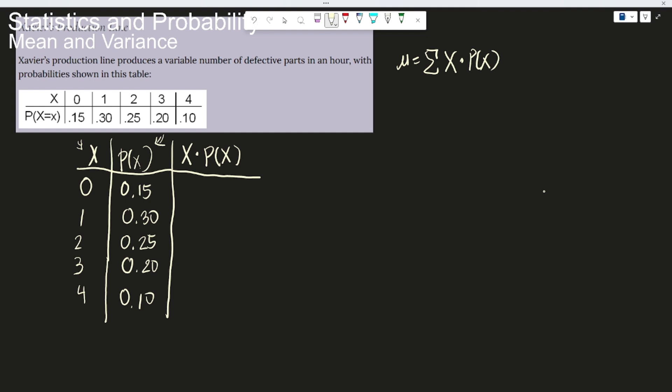So row by row. So that would be 0 times 0.15 would be equal to 0. 1 times 0.30 would be equal to 0.30. 2 times 0.25 would be equal to 0.50. 3 times 0.20 would be equal to 0.60. And 4 times 0.10 would be equal to 0.40.